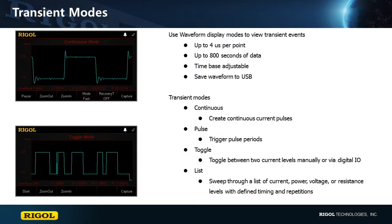Now let's look at the transient modes available in the DL3000 electronic load. There are three different modes for pulsing the current load on your device.